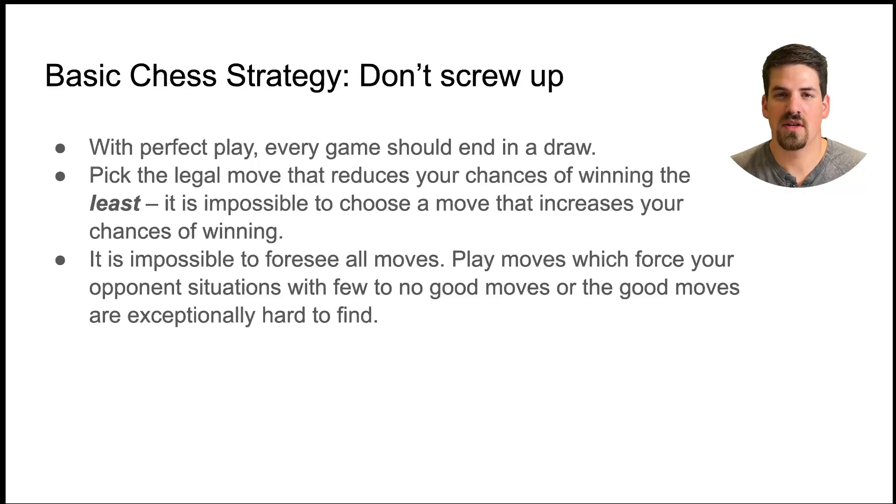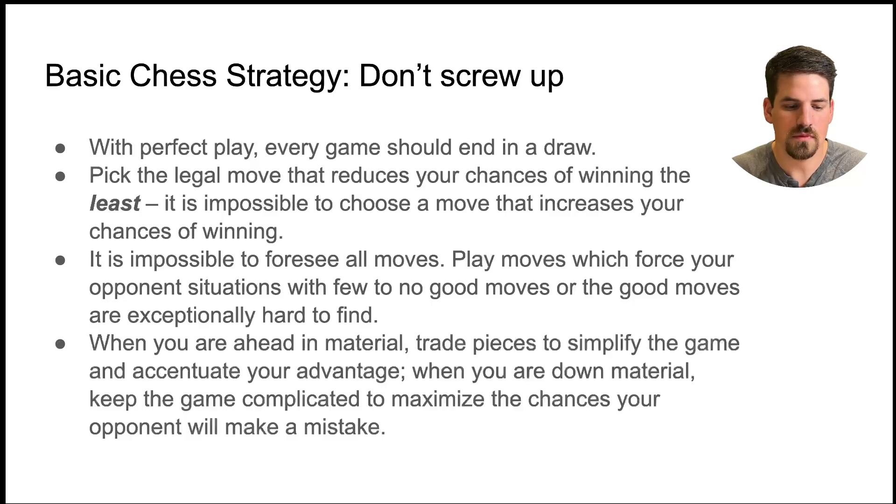Because chess is such a massive game with such massive possibilities of positions it's impossible to foresee everything, so you have to pick moves that force your opponent into situations with no good moves or moves that are exceptionally difficult to find. And it should be noted that chess is such a large game that even computers cannot possibly see all the possible moves. One basic strategy point is that if you are ahead in material, that is to say you have more pieces or more valuable pieces than your opponent, you want to trade down pieces and simplify the game, get as many pieces off the board as possible to accentuate your advantage. On the other hand if you're down in material and your opponent has an advantage, you want to keep as many pieces on the board as possible to complicate the game and increase the chances that your opponent will make a mistake.